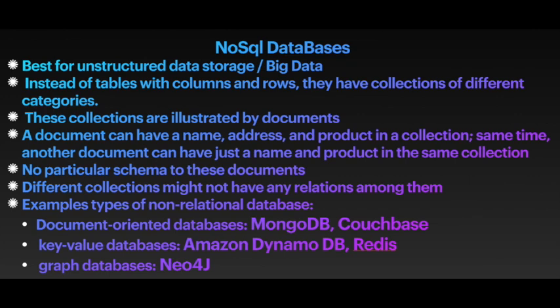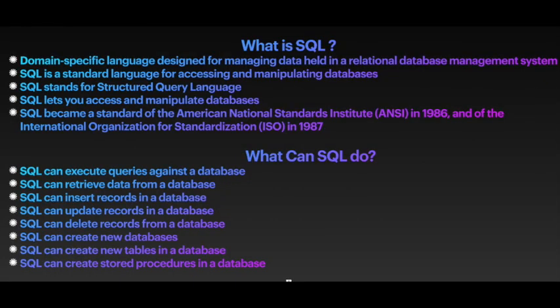Instead of tables with columns and rows, NoSQL databases have collections of different categories illustrated by documents. A document can have a name, address, and product in a collection. Another document in the same collection might have just a name and product — there is no particular schema. There are many types of non-relational databases: document-oriented databases such as MongoDB and CouchBase, key-value databases such as Amazon DynamoDB and Redis, and graph databases such as Neo4j.